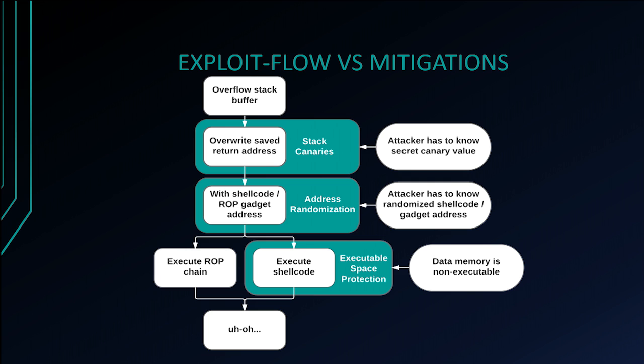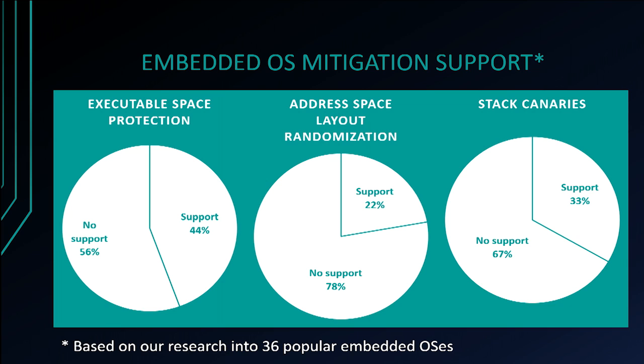For those unfamiliar with how these mitigations work complementarily: consider a traditional stack buffer overflow. The attacker overflows a stack buffer and overrides a saved return address. Stack canaries require an attacker to know a secret value to properly override this address and hijack control flow. Address space layout randomization ensures memory layout secrecy by randomizing memory object locations. And by making data memory non-executable via executable space protection, we force attackers to use ROP chains. We evaluated 36 popular embedded operating systems and found under half have executable space protection, 22% have ASLR support, and one third have stack canary support — far lower than in the general purpose world.